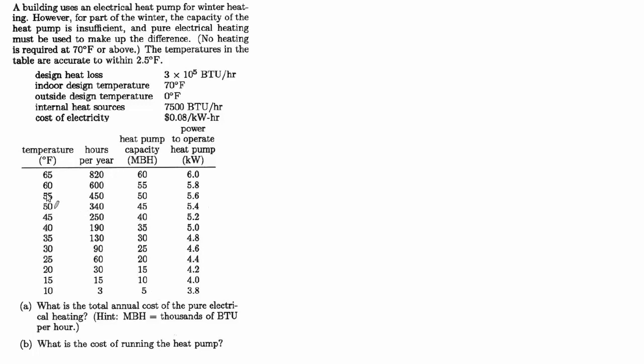So you'll notice as it gets colder and colder, there's less and less hours spent at that temperature. And also you'll notice if you add up all these hours, it does not add up to the total number of hours in a year, 8760, because for a decent percentage of the year, it's 70 degrees or above, and no heating is required. We also know the heat pump capacity, which changes as a function of the temperature outside.